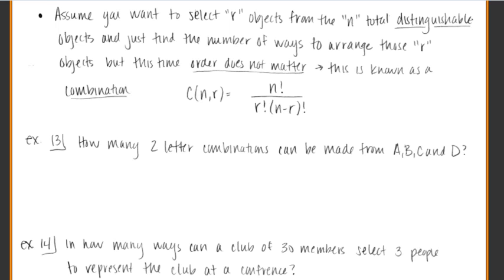We want to select r objects from n total distinguishable. All right, so we're talking about distinguishable things here. We can tell everything apart. And then we want to find the number of ways our objects can be arranged, but this time, order doesn't matter. This is what a combination is. Okay. The difference between, the main difference between a combination and a permutation, everything we've done so far is a permutation, and in a permutation, order matters.